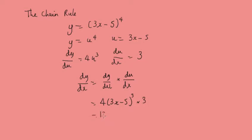That gives us 12(3x minus 5) to the power 3. That's just a very brief overview of the chain rule. If you can't remember it or are a bit rusty on it, go back and do a few examples on the chain rule to rejig your memory, because you'll need it for these exercises.